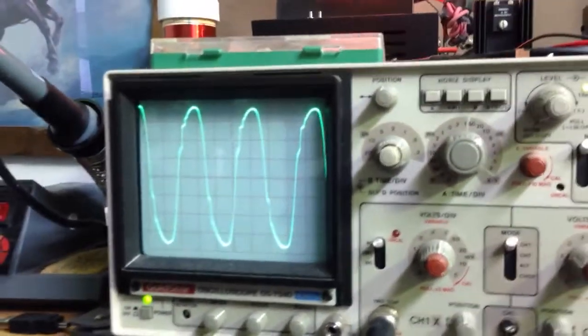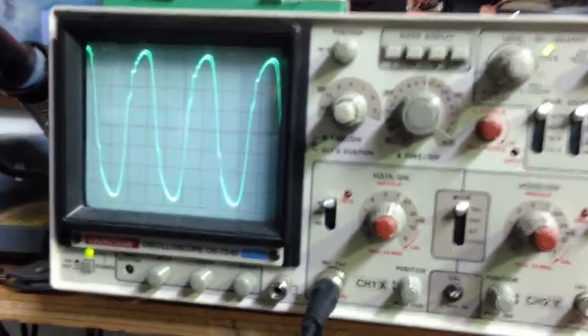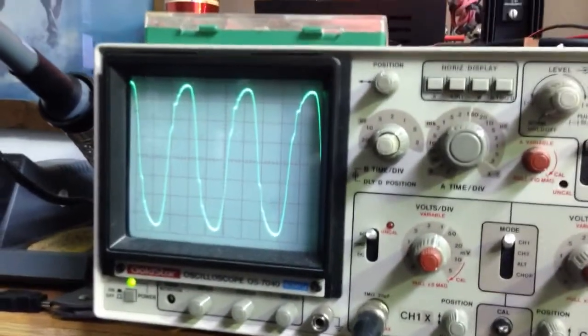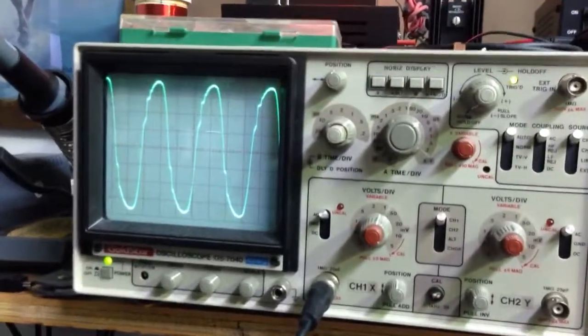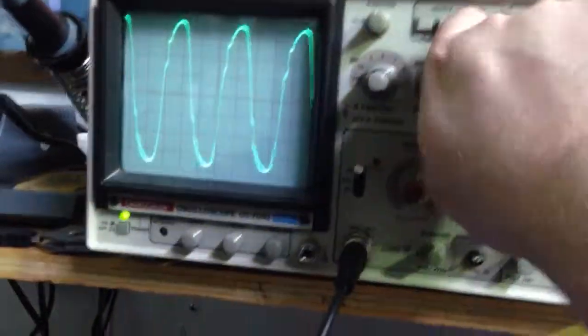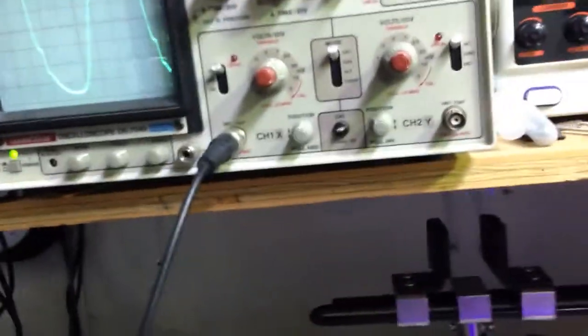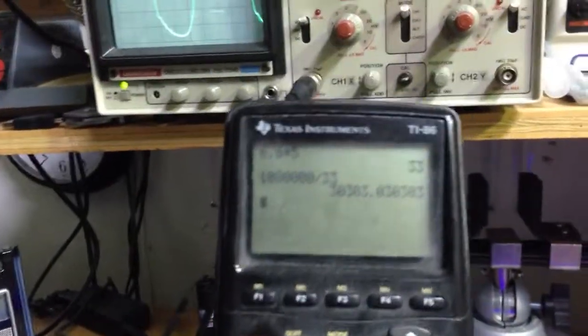Nice sinusoidal shape. There's a little bit of distortion there, but nothing the lamp will care about for sure. I had a 10-microsecond division right now. And I put it to 5 for better resolution. And ran the math on it. And you're looking at 30,303 Hz.